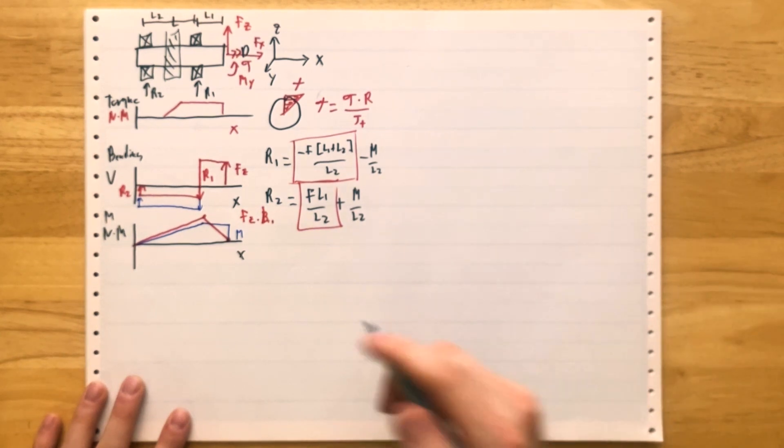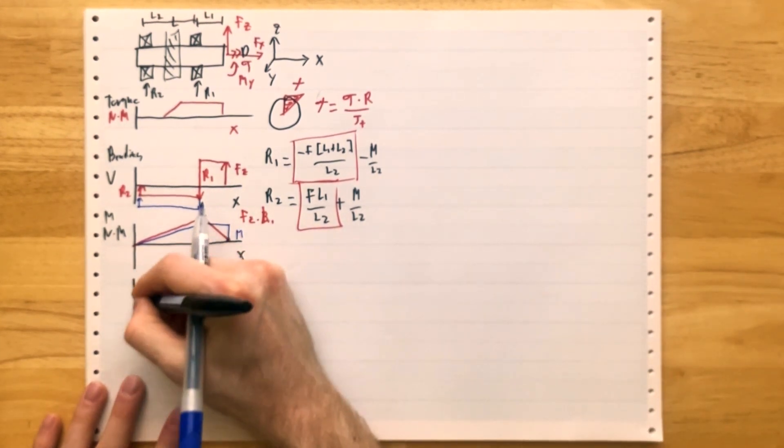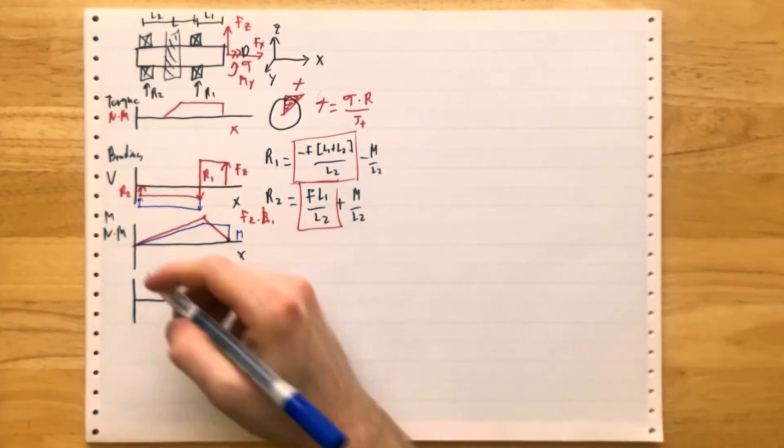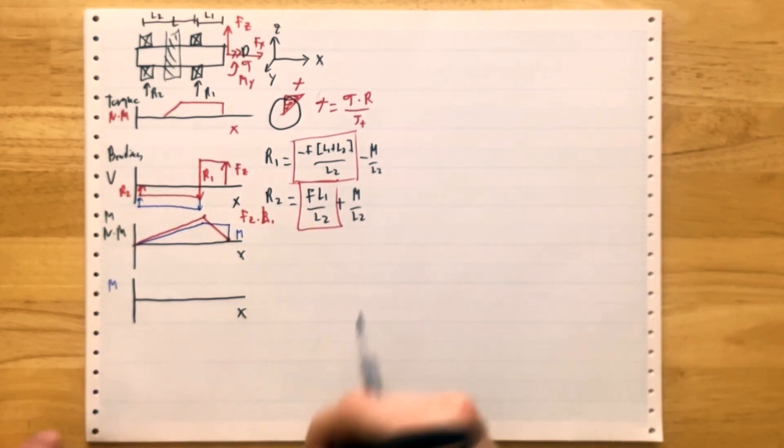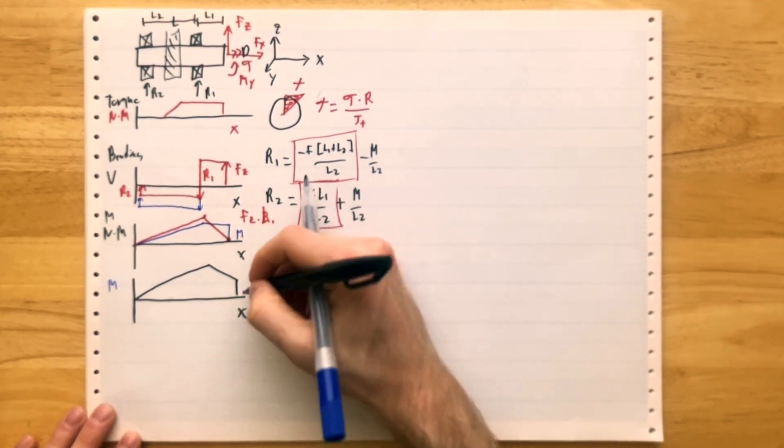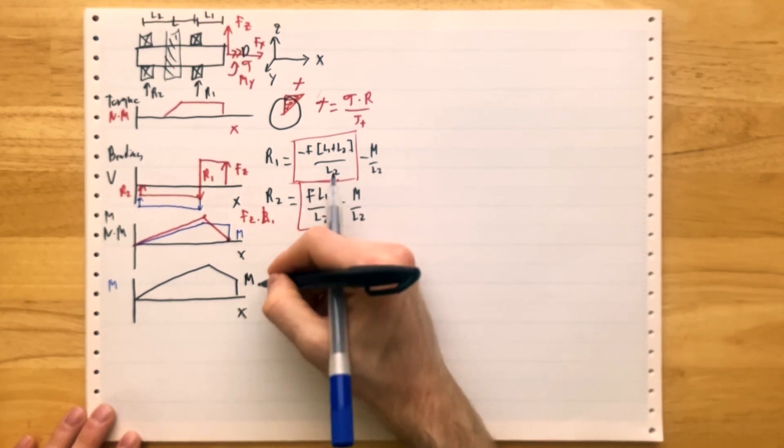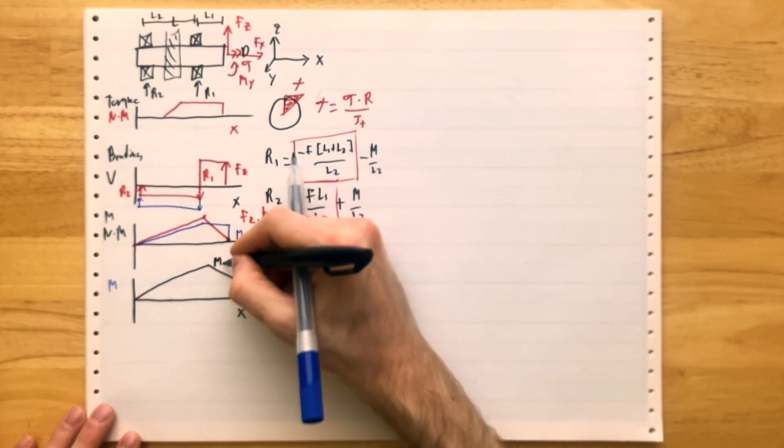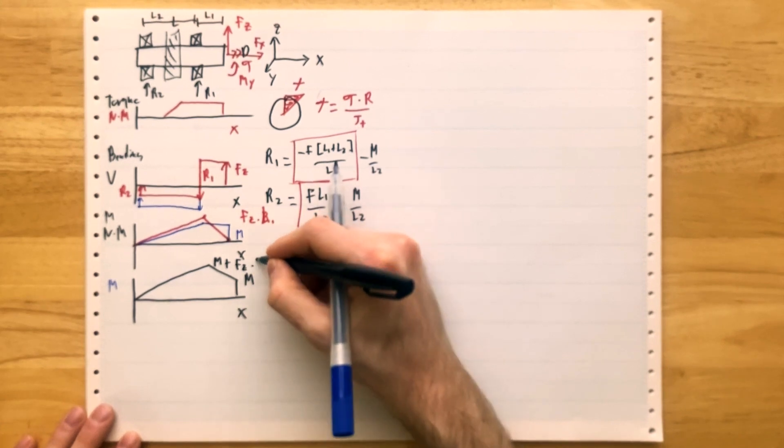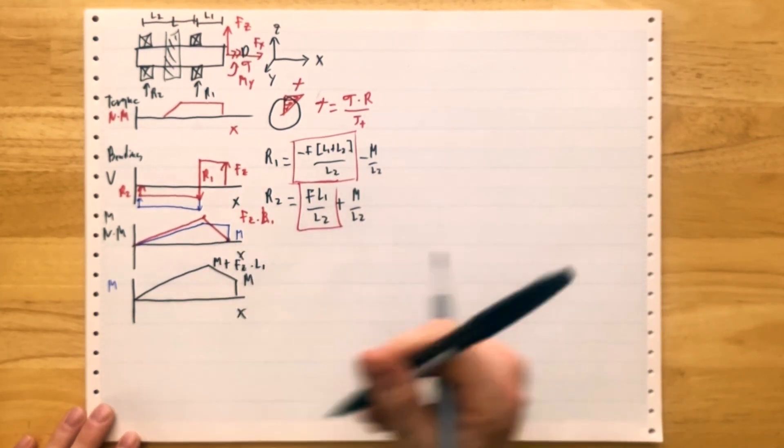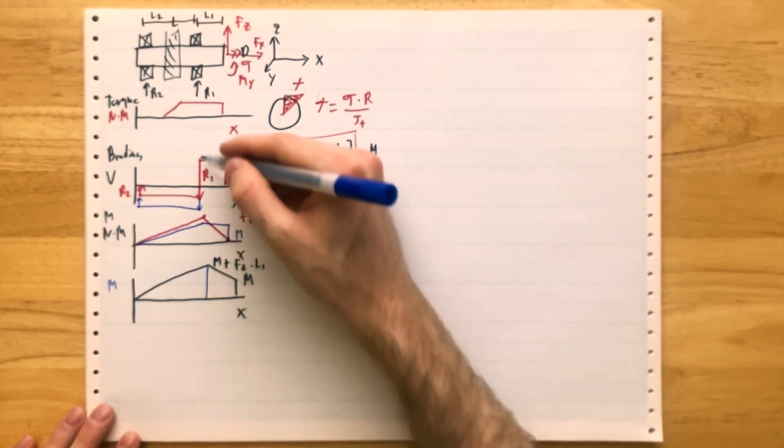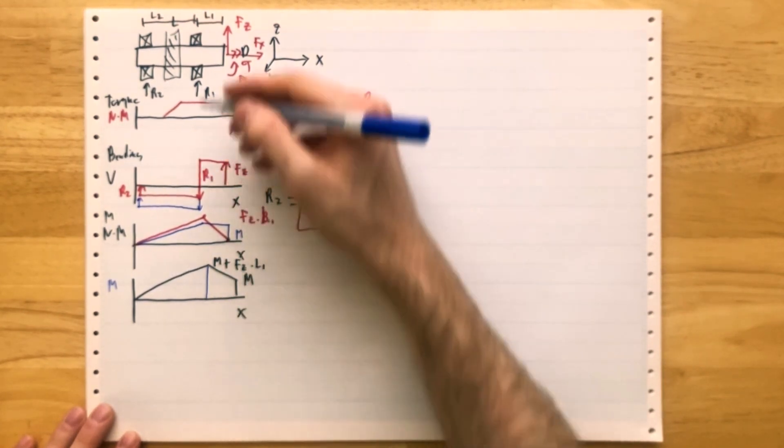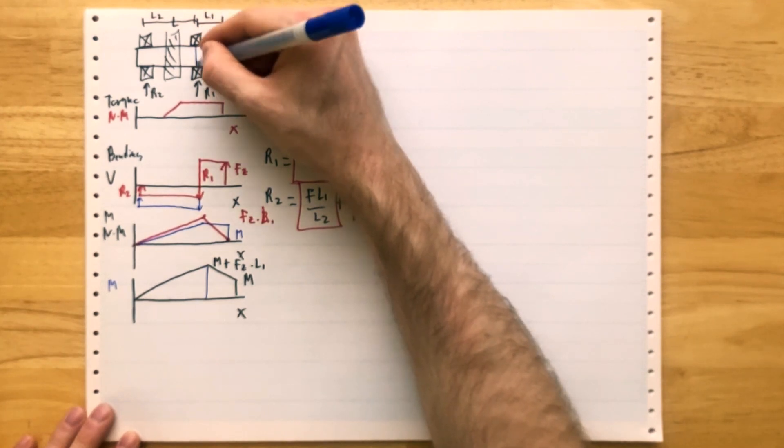If you put all these together, you'll get the following. So the total moment in the beam, or shaft, is going to be looking like this. It starts jumping up to M, it ends up at M plus Fz times L1, and then it tapers down to zero. So we know that the maximum moment occurs right there at the point of load application R1, which is right underneath the bearing, right there.